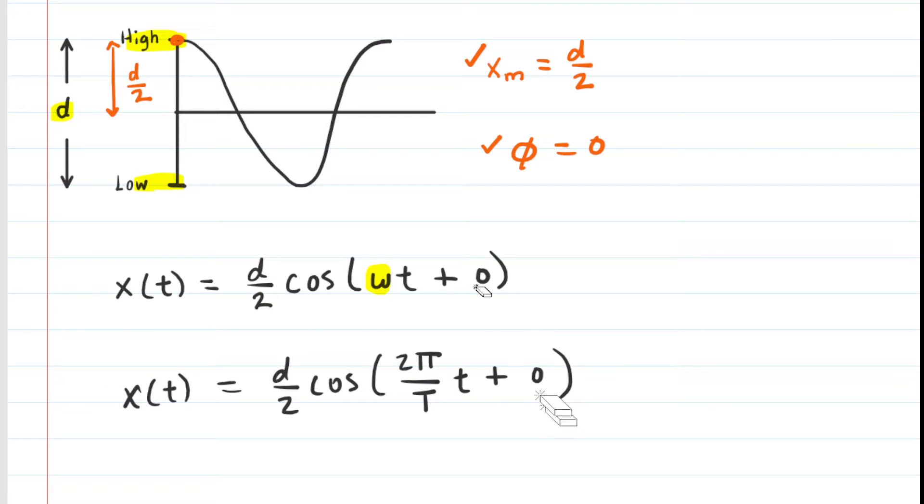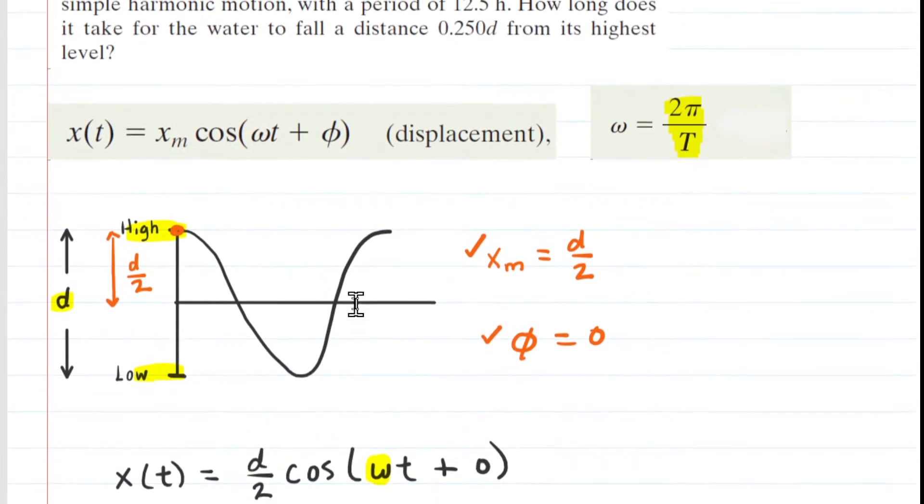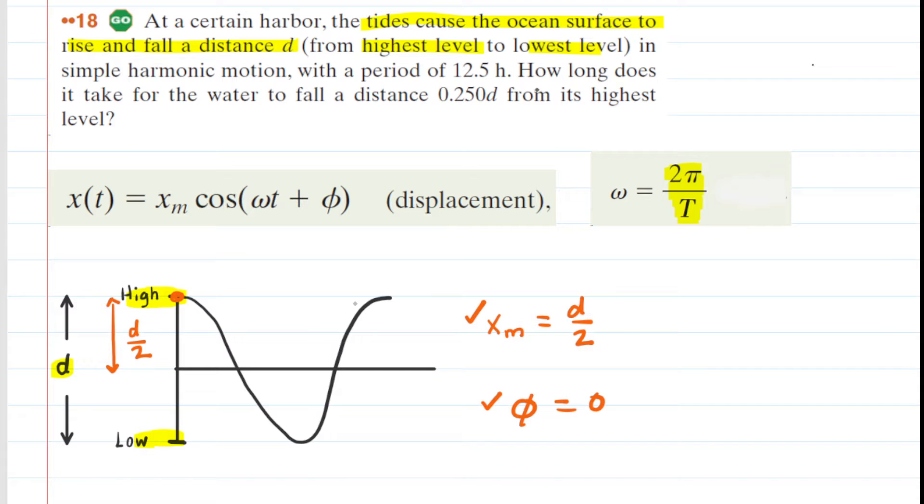Now, we can simplify the equation a little bit here because we have this plus 0. So we can knock that out of the equation. And then we want to go back and reread the problem, get a sense of what the question is asking us to do. It says, how long does it take for the water to fall a distance of 0.25d from its highest level?